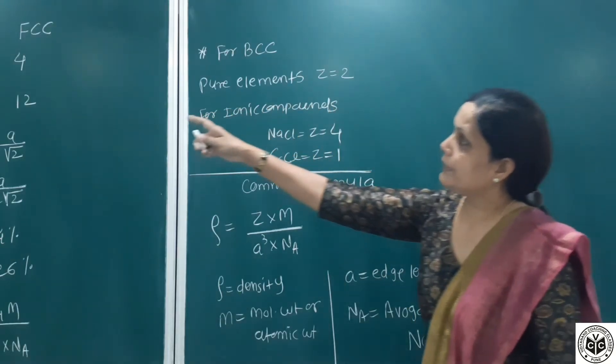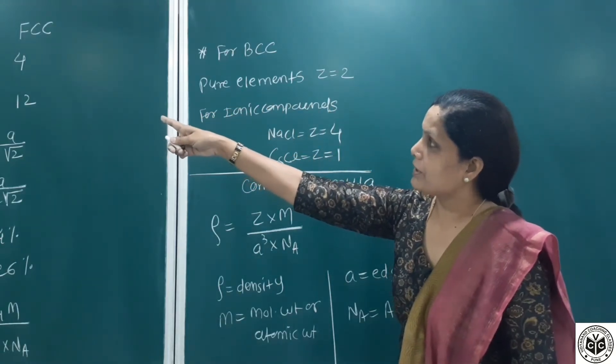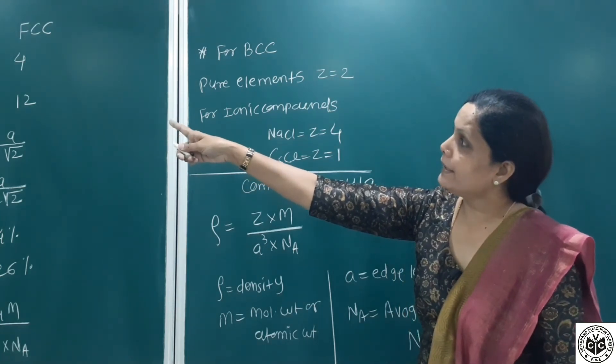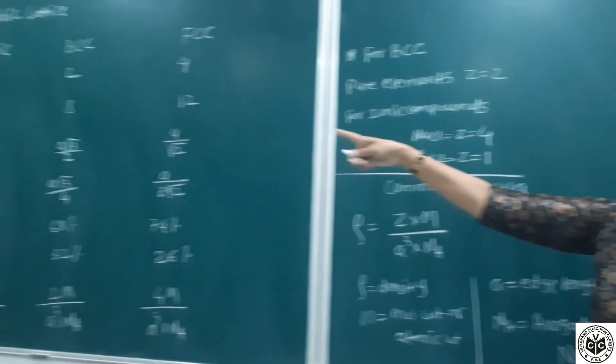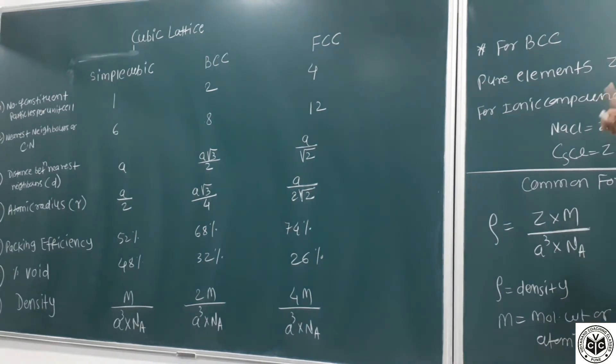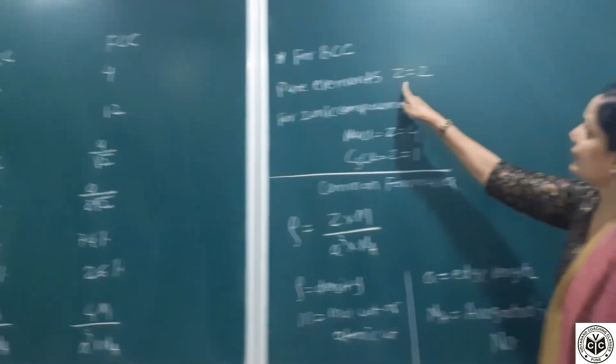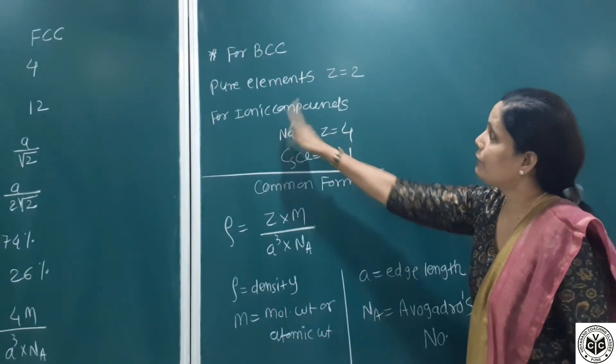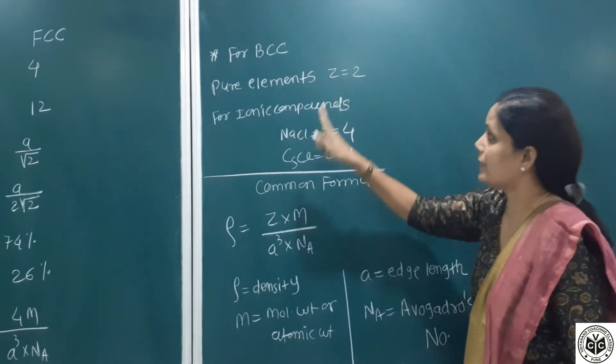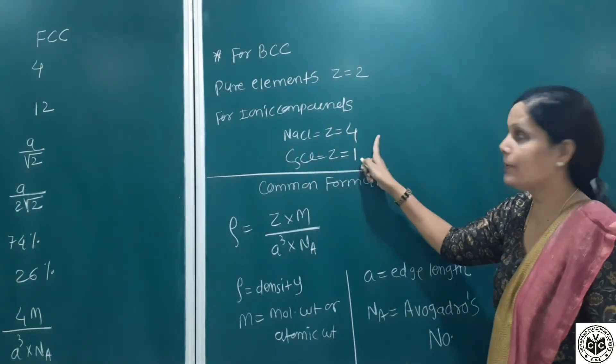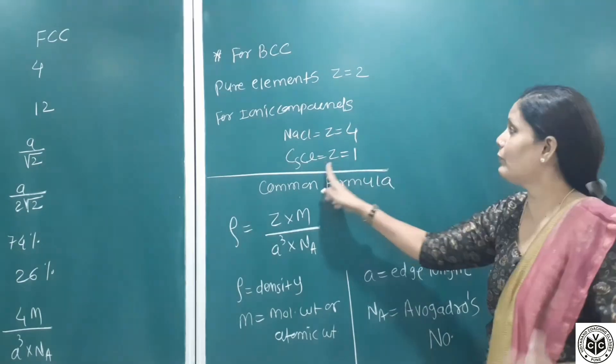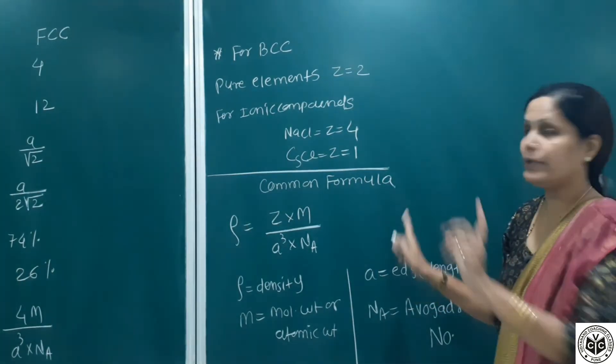For BCC structure, Z is 2, meaning number of constituent particles per unit cell is 2. For pure elements, Z is 2 for BCC. But for ionic compounds with BCC structure, NaCl has Z equals 4, and CsCl cesium chloride has Z equals 1. You have to keep this in mind.